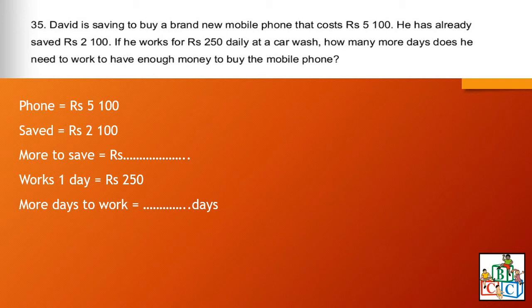You have to write down: the phone costs 5100 rupees, he has saved 2100 rupees — calculate how much more he needs to save. He earns 250 rupees per day. Once you have calculated how much more he needs to save, divide by one day's earnings of 250 rupees. The answer you get is the number of days he needs to work more. Re-read the question and show your working properly.